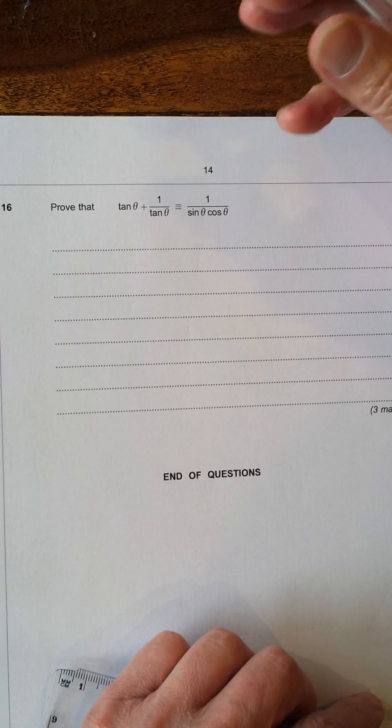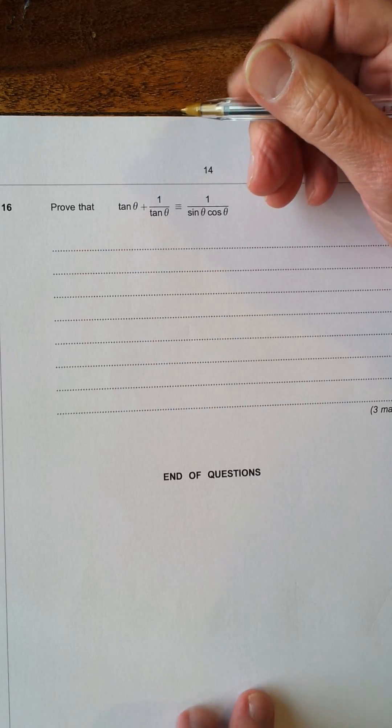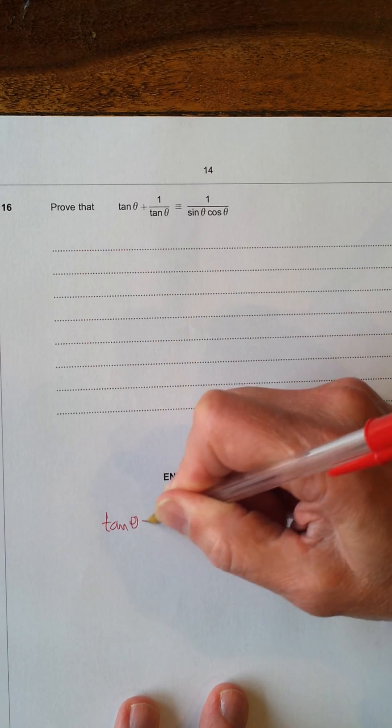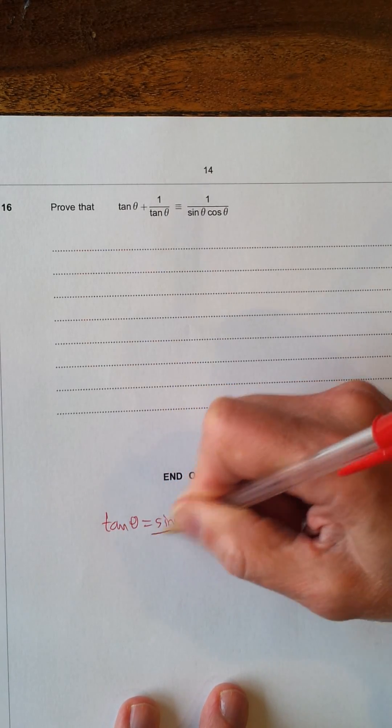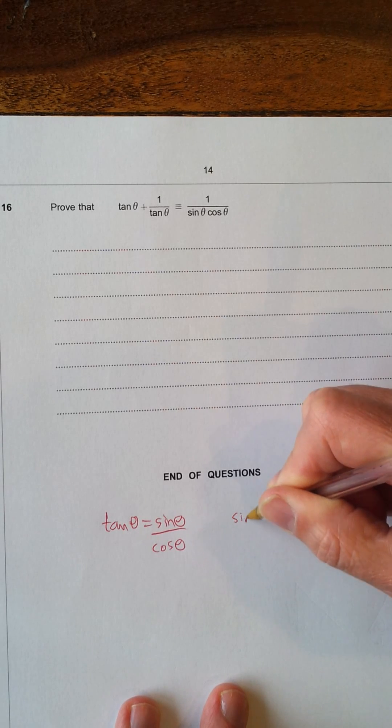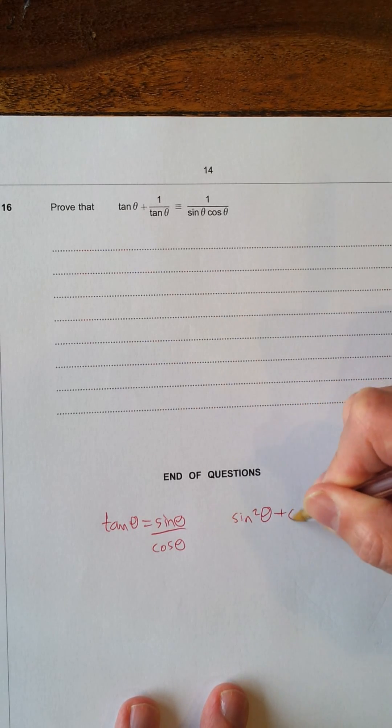Now, first of all, you need to remember the two trig identities. You've got to learn these. The first one is tan θ = sin θ/cos θ. And the other one is sin²θ + cos²θ = 1.